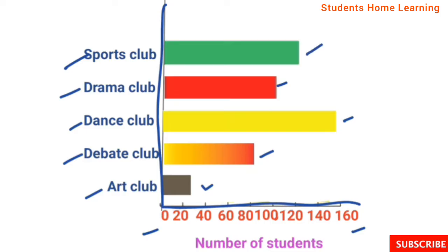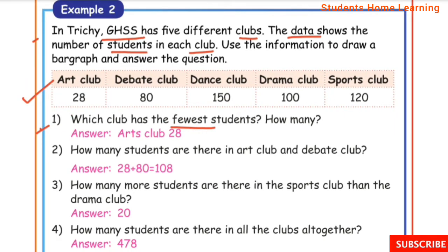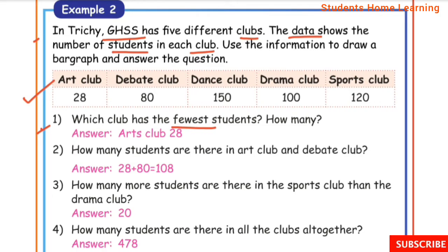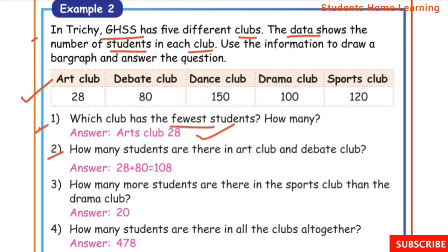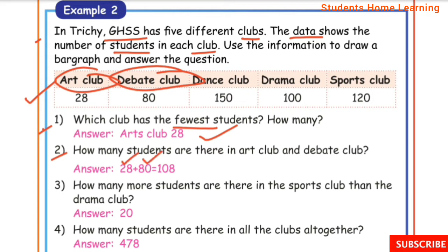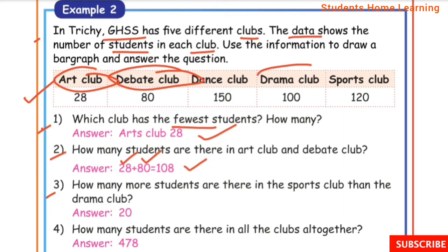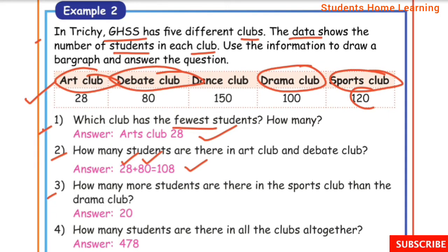Sports club: 120 students, bar up to 120. Questions: 1. Which club has the fewest students? Answer: Art club, 28 students. 2. How many students are there in Art club and Debate club together? Art club 28 plus Debate club 80 equals 108. 3. How many students are there in all the clubs together? Adding all numbers, the answer is 478.